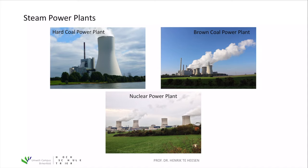First, we'll talk about steam power plants. Here you can see three different types of power plants working with hot steam to generate electricity. In the upper left-hand corner, you see a picture of a hard coal power plant. Then on the right-hand side, a brown coal or lignite-based power plant — they use burnt coal to generate electricity. And finally, at the bottom, you see a picture of the nuclear power plant Cattenom in France, which uses uranium to generate electricity.